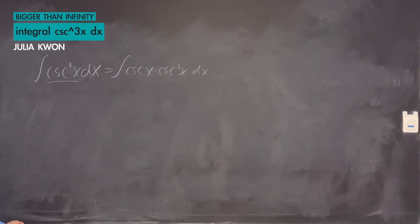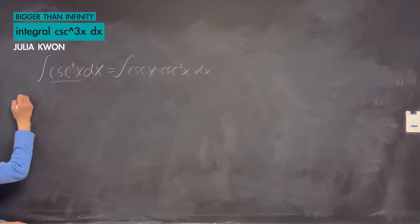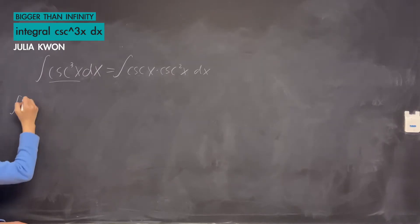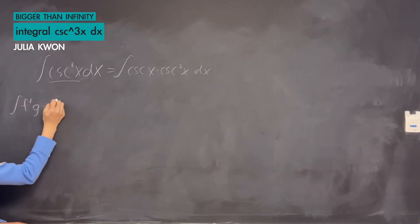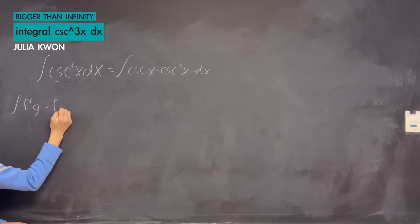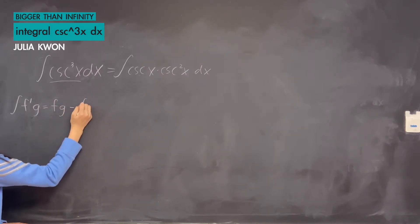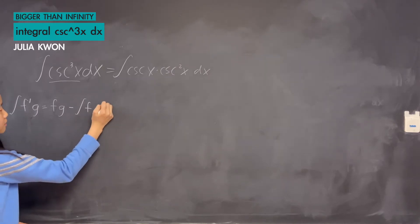We're going to be using integration by parts. Integration by parts says that the integral of f prime times g is equal to f times g minus the integral of f times g prime.